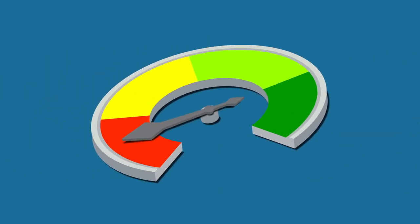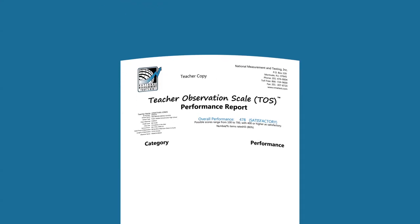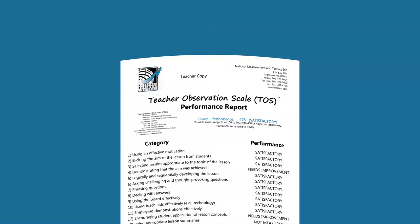The Teacher Observation Scale Score Report provides an overall performance rating, plus information on 22 dimensions of classroom instruction.